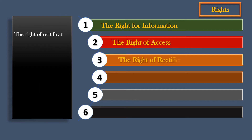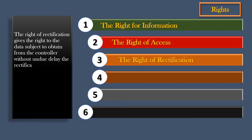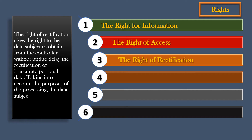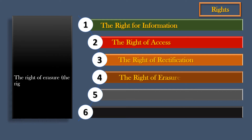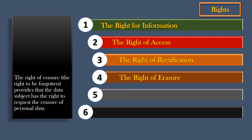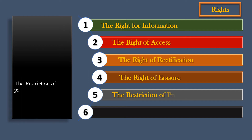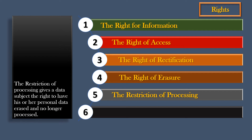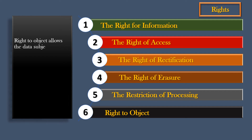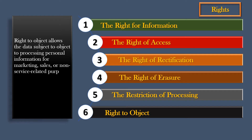The right of rectification gives the right to the data subject to obtain from the controller, without undue delay, the rectification of inaccurate personal data. Taking into account the purposes of the processing, the data subject has the right to have incomplete personal data completed. The right of erasure, the right to be forgotten, provides that the data subject has the right to request the erasure of personal data related to them. The restriction of processing gives a data subject the right to have his or her personal data erased and no longer processed. The right to object allows the data subject to object to processing personal information for marketing, sales, or non-service related purposes.